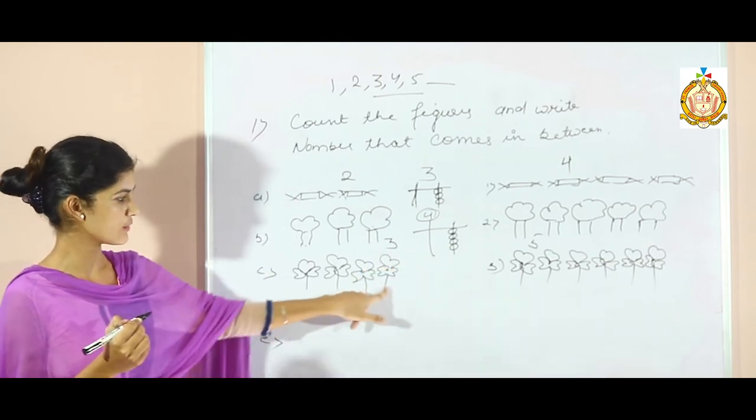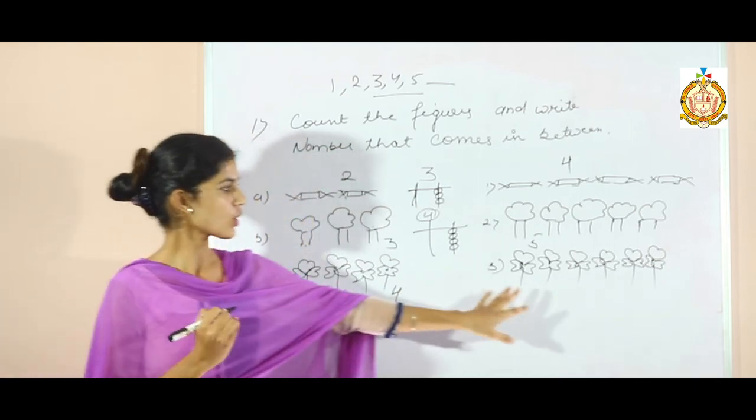Now, count these flowers. 1, 2, 3, 4. How many flowers are there? 4. Now, count this side.